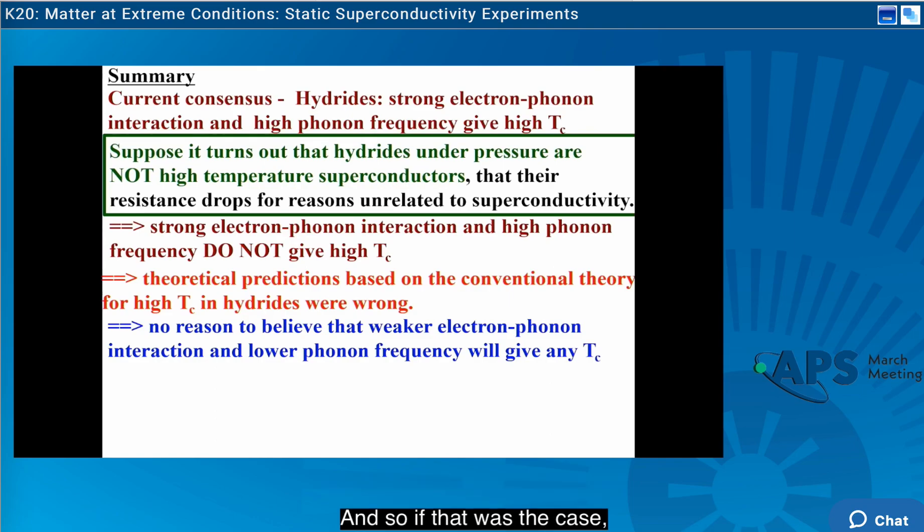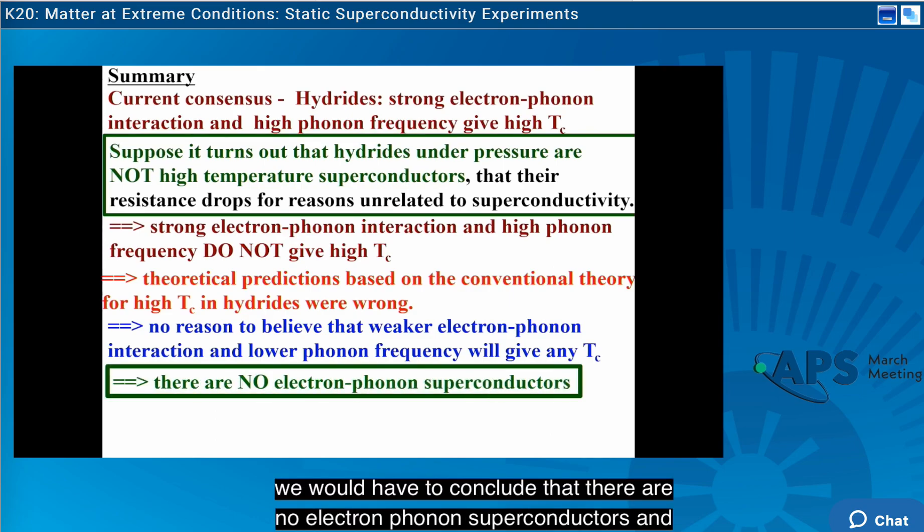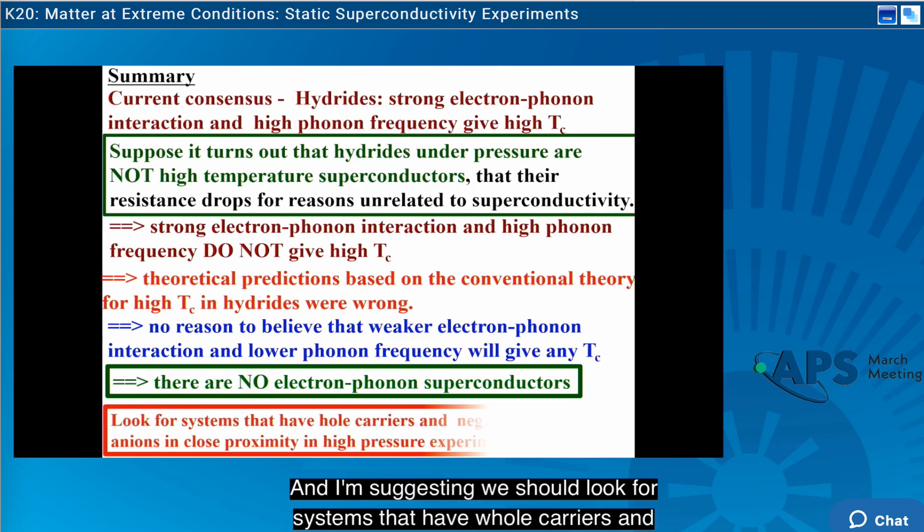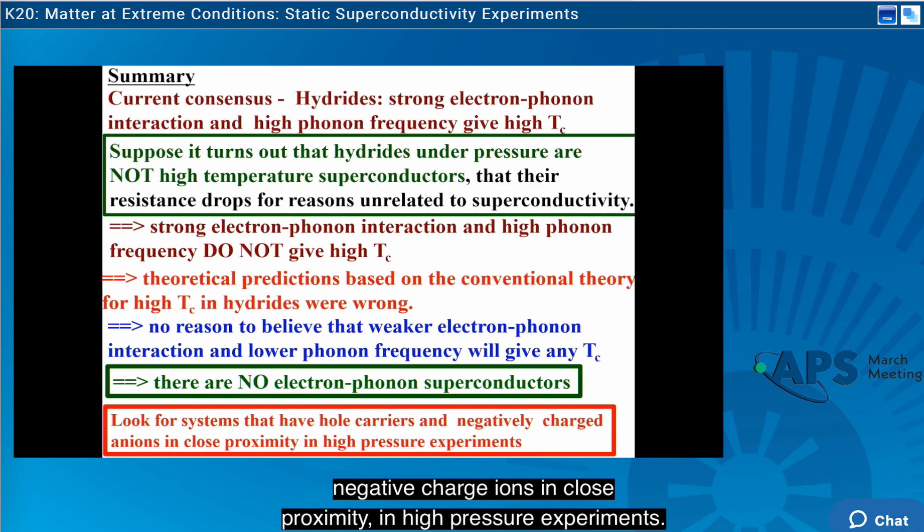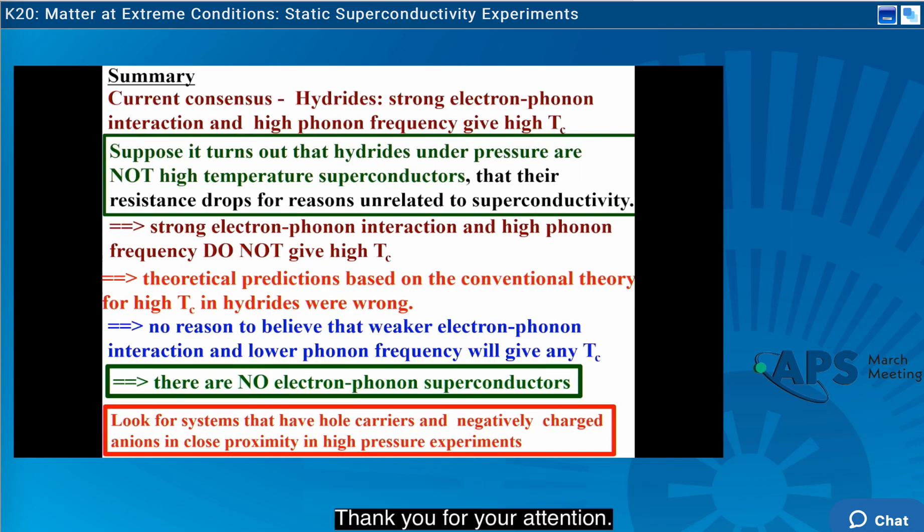And then it wouldn't be any reason to believe that weaker electron-phonon interaction and lower phonon frequency will give any TC, right? And so if that was the case, we would have to conclude that there are no electron-phonon superconductors and look for other mechanisms. And I'm suggesting we should look for systems that have hole carriers and negatively charged anions in close proximity in high-pressure experiments. And that's how we are going to find room-temperature superconductors. Thank you for your attention.